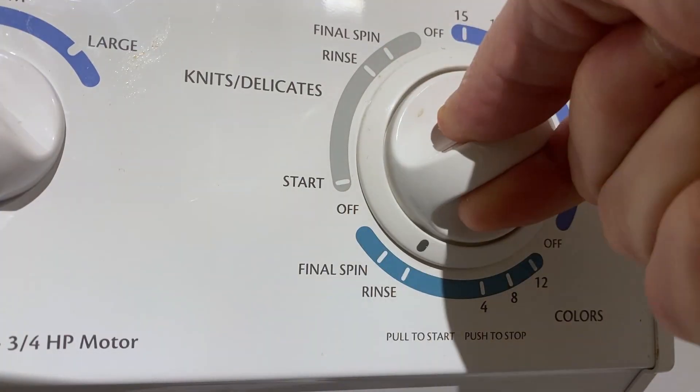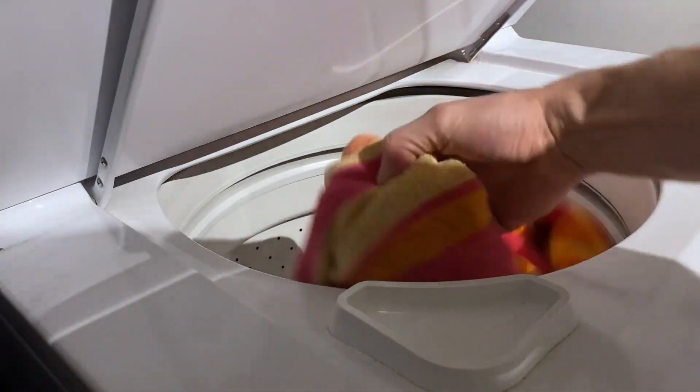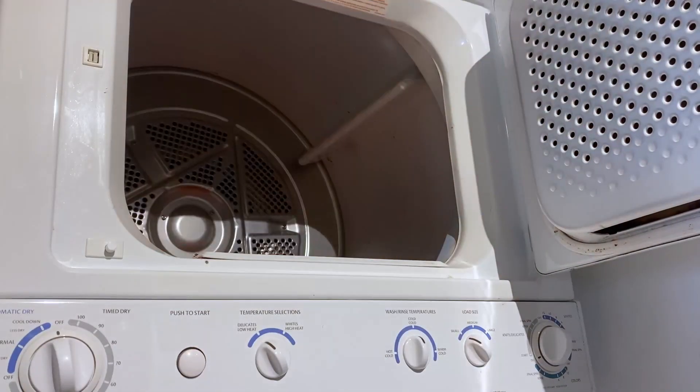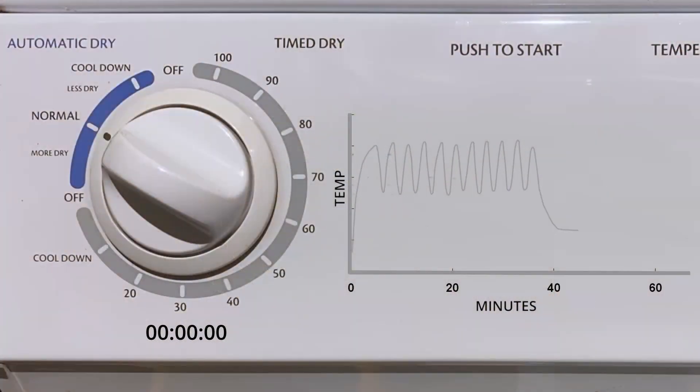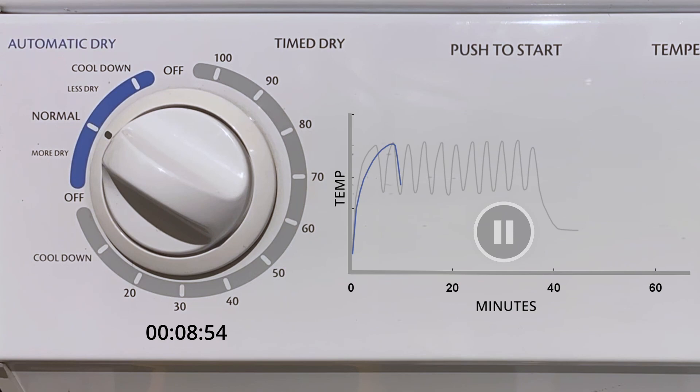This time I'll rinse and spin two towels to help us better understand what's going on here. Then we'll run both of them through an auto dry cycle with the knob at the exact same starting position as before. I'll keep the one towel graph in the background to make it easier to compare. If we pause it here, we can already see that two towels took longer to reach the upper temperature limit than one towel. This makes sense because the same heating element is trying to evaporate a higher moisture content inside the basket.